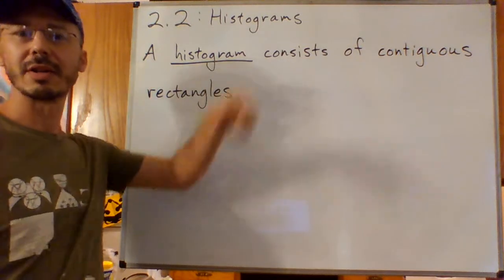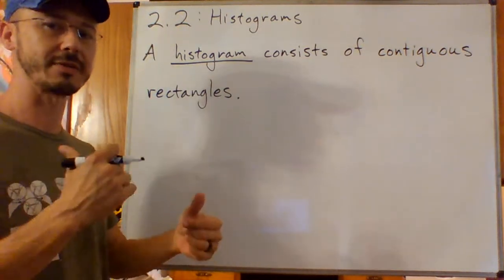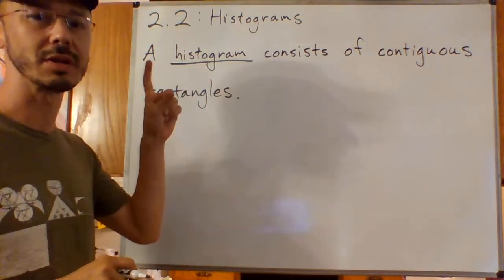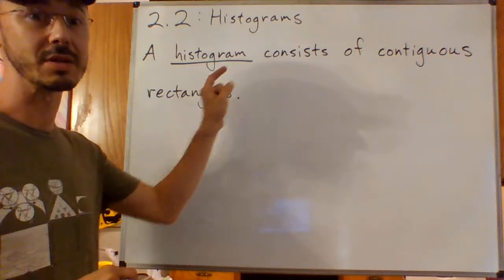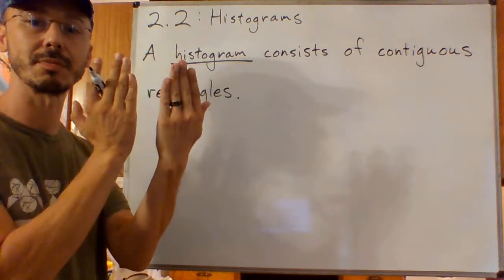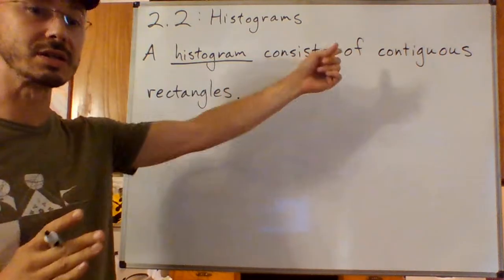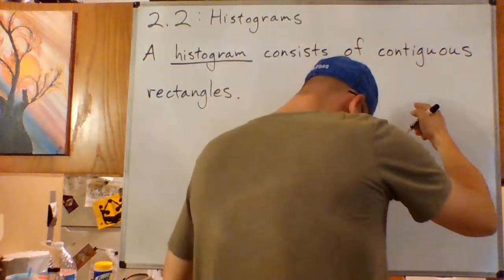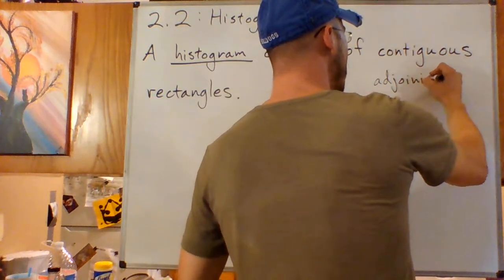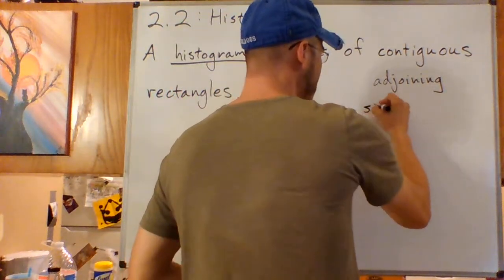Section 2.2 is about histograms. These are related to the bar graphs that we saw in section 2.1, but my definition here really is just the difference. A histogram consists of contiguous rectangles. The bar graph rectangles had space between them. These are contiguous. Another word for that is adjoining or adjoined, side by side.